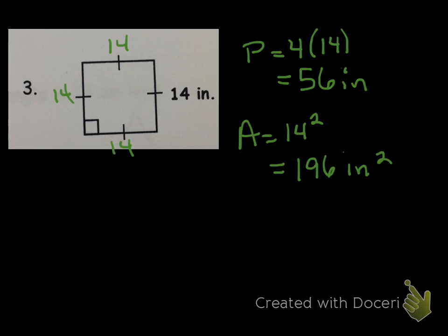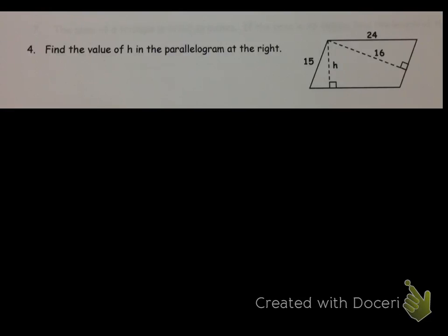So that was just a basic review of area and perimeter. Now we're going to go a different way. In this question, we're looking for the height. When you've done area before, you've always kind of relied on just knowing the base and knowing the height, or maybe knowing the area and working backwards. But remember, we've learned about trigonometry, so we're able to find the different information.